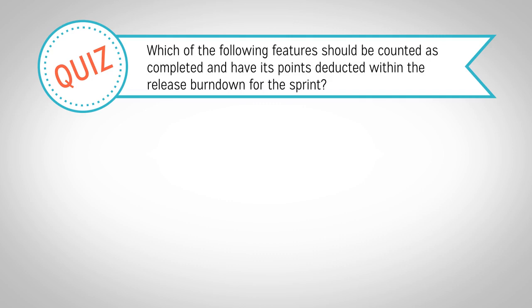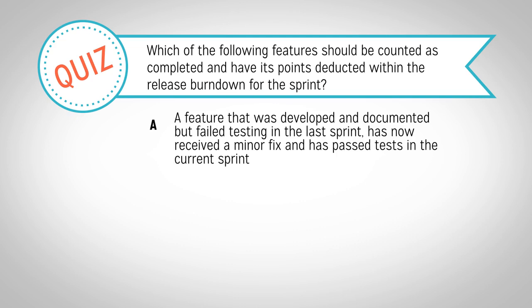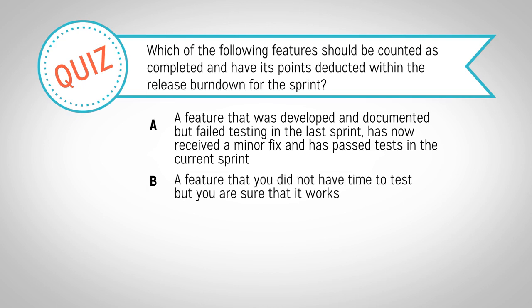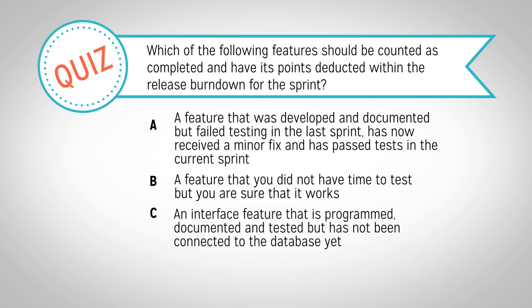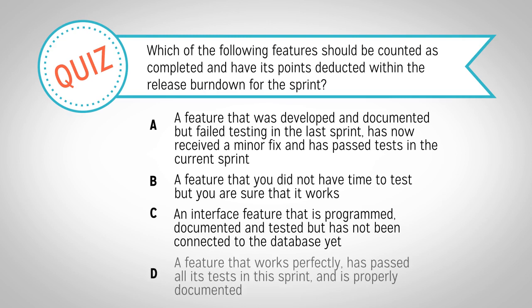You are working on a team developing a mobile application. You have just completed your third sprint. Your team's definition of done includes only features that are programmed, documented, tested, and ready for market. Which of the following features should be counted as completed and have its points deducted in the release burndown? A: A feature that failed testing last sprint, received a minor fix, and has now passed tests this sprint. B: A feature you did not have time to test but are sure works. C: An interface feature that is programmed, documented, and tested but not yet connected to the database. D: A feature that works perfectly, has passed all tests this sprint, and is properly documented.